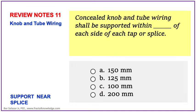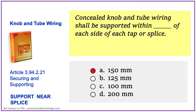Another possible problem asks: concealed knob and tube wiring shall be supported within blank of each side of each tap or splice. What is the support distance? The answer can be found in 2017 PEC Article 3.94, page 274, specifically section 3.94.2.21 Securing and Supporting. The keyword is 'support each side of each tap or splice.' The answer is letter A: 150 mm. Each knob tube wiring shall be supported.